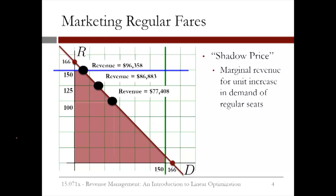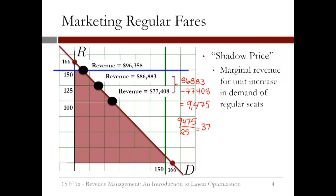So what's the shadow price in this case? Remember that the shadow price is the marginal revenue for a unit increase in demand, in this case of regular seats. From 100 to 125, the revenue increased by $86,883 minus $77,408, which is equal to $9,475. Since this was an increase of 25 units of demand, the shadow price is 9,475 divided by 25, which equals 379. We can calculate that this is the same shadow price from 125 to 150.